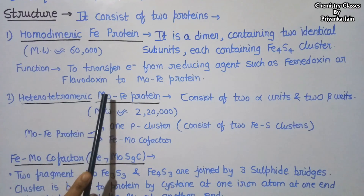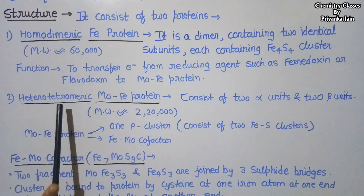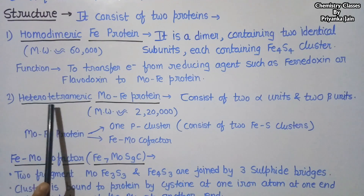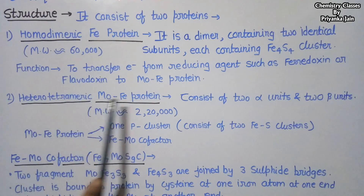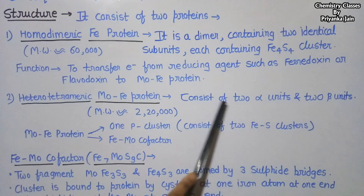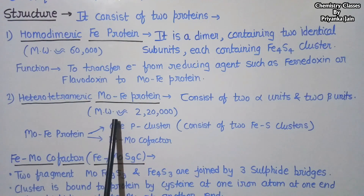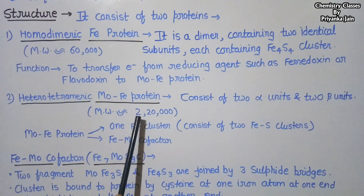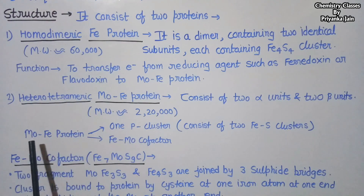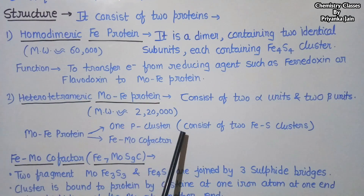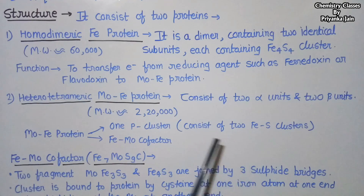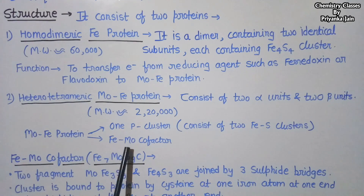The second protein is the heterotetrameric molybdenum-iron protein. It is a tetramer with four units, but the four units are not identical — there are two alpha units and two beta units. The molecular weight of this protein is approximately 220,000. This molybdenum-iron protein consists of one P cluster, which further consists of two iron-sulfur clusters, and an iron-molybdenum cofactor.